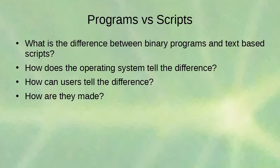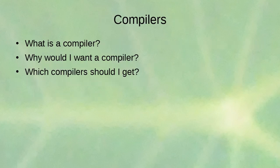Text editors are used to create text-based scripts, and compilers are used to take source code made with a text editor and convert it to binary. A compiler reads through a source code file, interprets what it means, and converts it into binary data that the CPU can understand. It's similar to an interpreter, but it converts all the way down to binary and stores it.